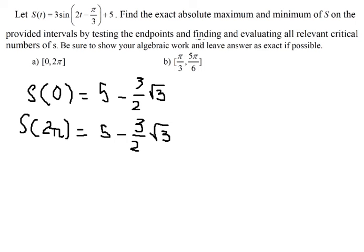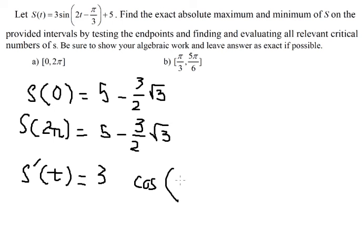Next, we need to find the critical numbers. To do this, we need to find the first derivative of s(t). The first derivative of sine is cosine. Continuing, the first derivative of 2t gives us 2. The constant terms go to zero — both of them are constants, so both give zero.